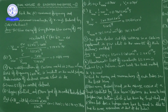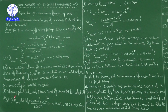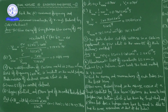For part B — stopping potential: using eV₀ = K_max = 0.34 eV, the charge e cancels, so V₀ = 0.34 volts. The stopping potential is 0.34 volts.